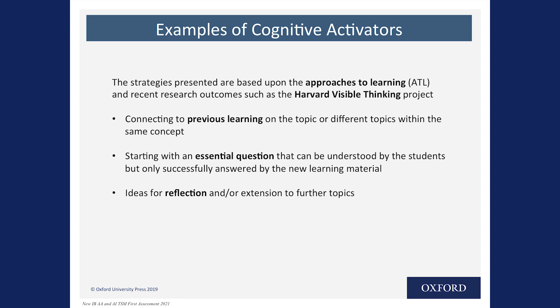Here are some examples. One is connecting to previous learning on the topic or different topics within the same concept. Another example would be starting with an essential question — something quite provocative that can be understood by students but can only be answered by learning new material and content. Another example is asking students to reflect or extend in terms of their understanding. We really value the importance of metacognition with our students — research says student achievement goes up when we give students opportunities to metacognitively reflect and think.